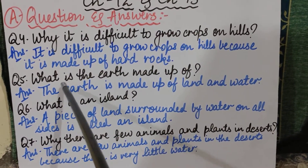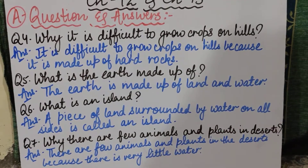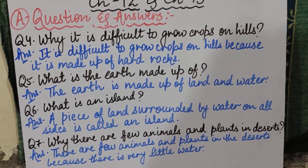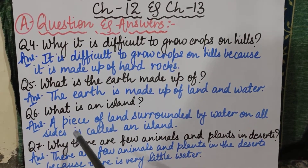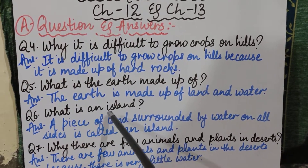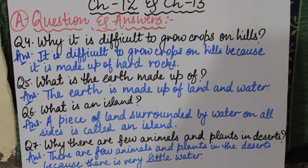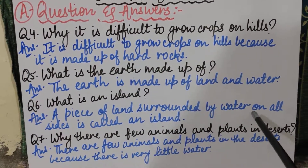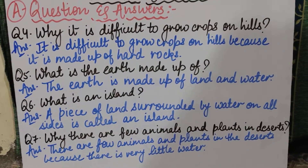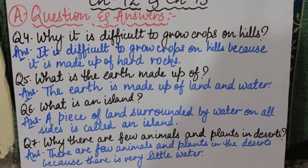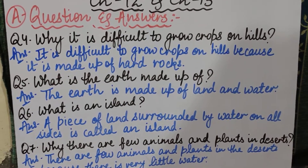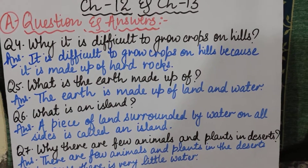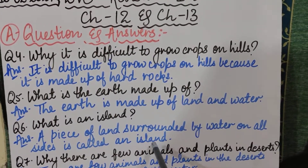Coming to the fifth question: What is the earth made up of? The earth is made up of land and water — those are the two things. Now the sixth question: What is an island? A piece of land surrounded by water on all sides is called an island. That piece of land, which is surrounded by water from all four sides, is known as an island. Is that clear?